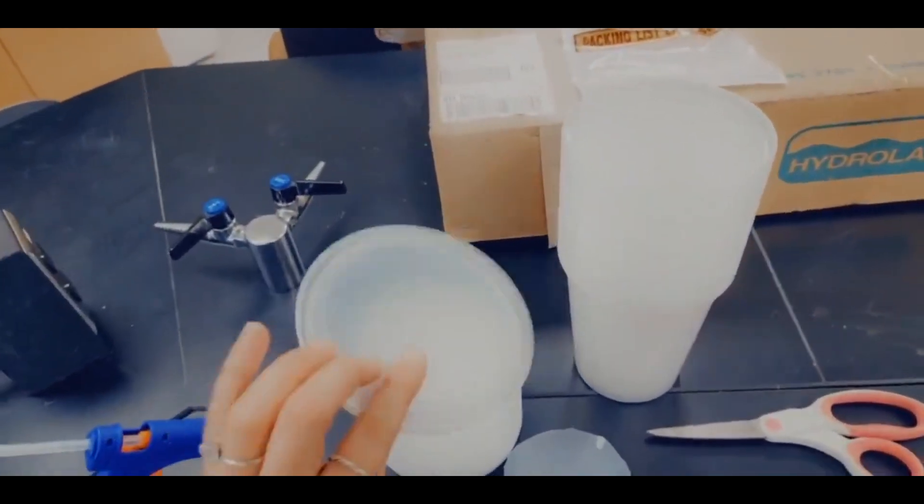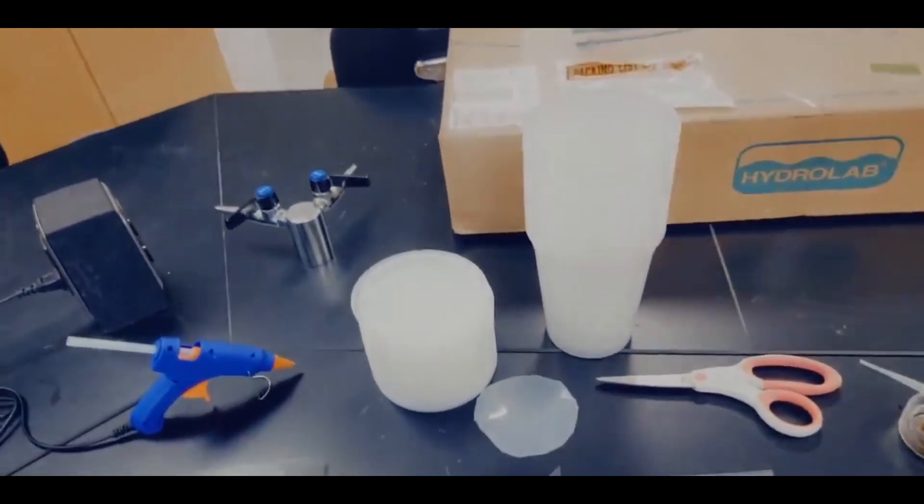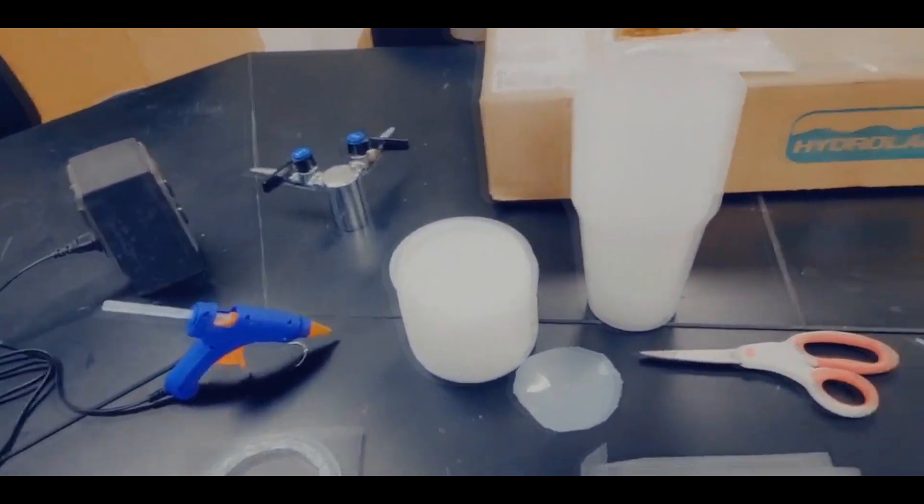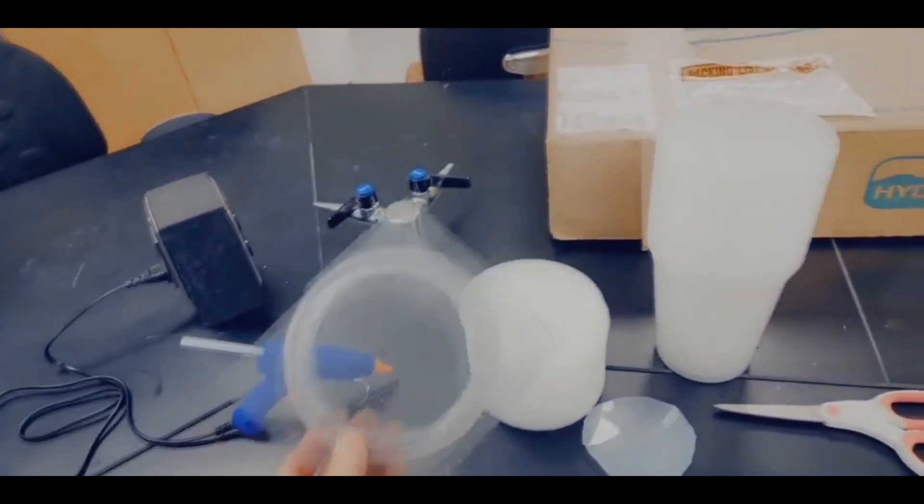It's nice if it comes with a lid because after the dragonfly metamorphoses into an adult, you don't want it to fly away. You don't want it to end up in your house or wherever you're raising it. So if you have a lid, you can kind of cut.